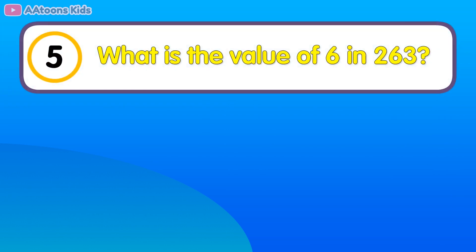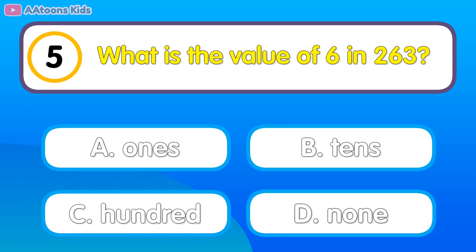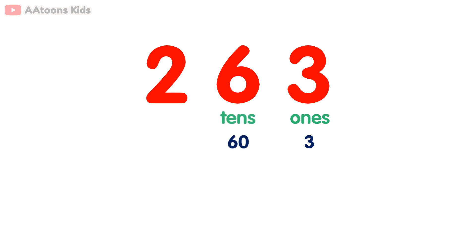What is the value of 6 in 263? Tens. First, put the values of numbers 263. The digit 3 is in the ones place, its value is 3. The digit 6 is in the tens place, its value is 60. And the digit 2 is in hundreds place, its value is 200. So the digit 6 is in the tens place.